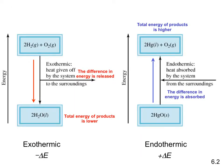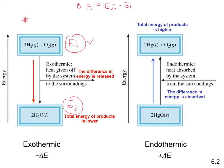Looking at the equation delta E equals E final minus E initial: on the left-hand diagram, we start with initial energy higher than the final value, so E final is smaller than E initial, giving an overall negative delta E — that's an exothermic reaction. The energy doesn't disappear; it's given off as heat from the reaction to the surroundings.